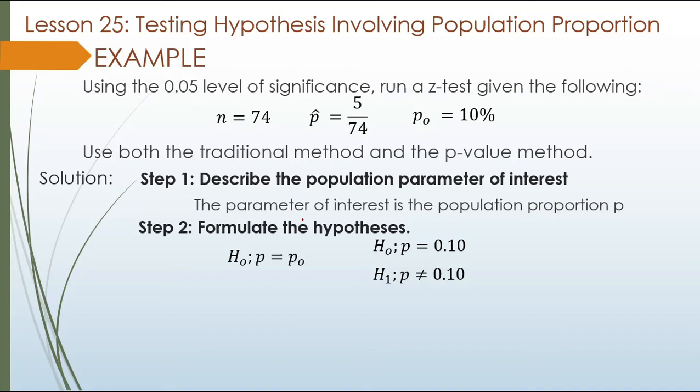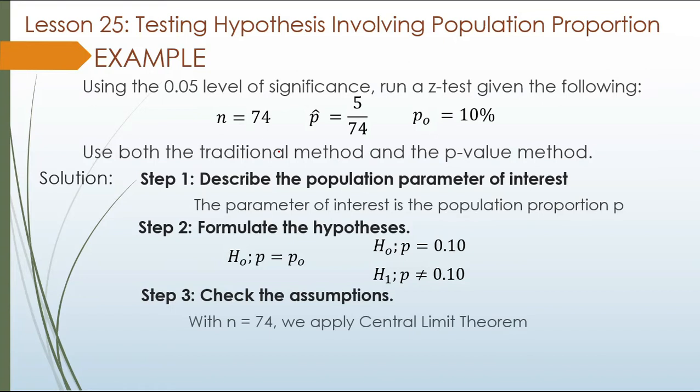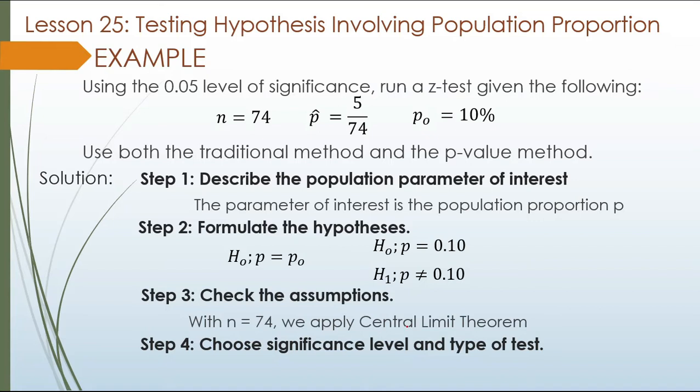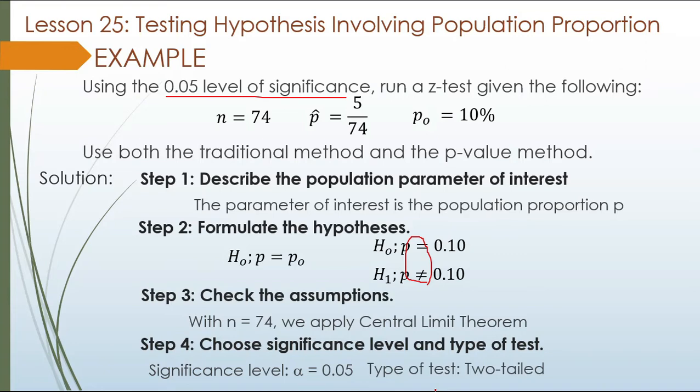Step 3: Let us check the assumptions. Our n is 74, therefore we can apply the Central Limit Theorem. Step 4: Let us choose the significance level and the type of test. The type of test is two-tailed, because not equal appears in the alternative hypothesis. The significance level equals 0.05, as given.